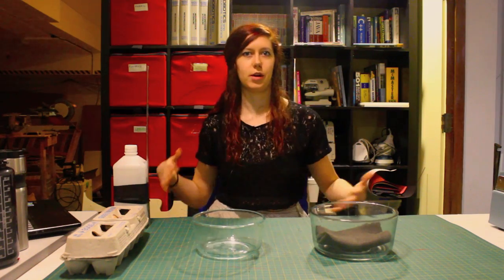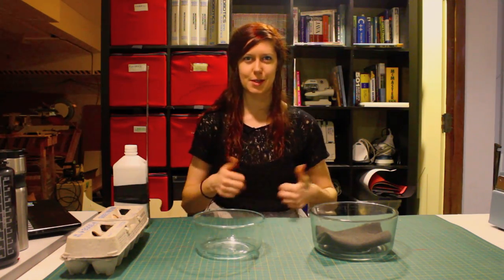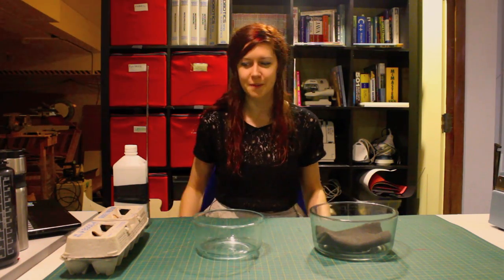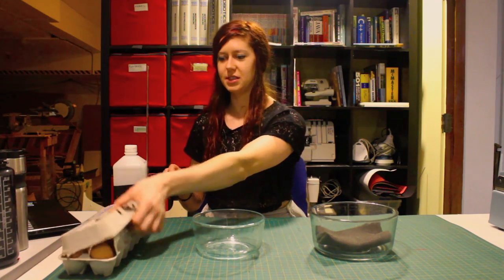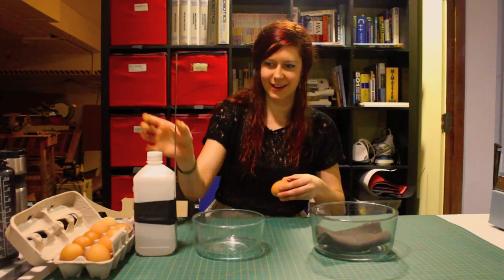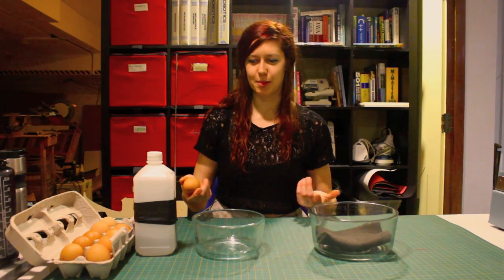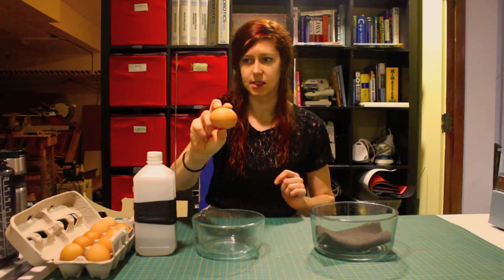Alright so now that we understand how to calculate impact force and figure out energy and stuff let's do a really awesome fun demonstration to show what we've learned. So I'm gonna use an egg drop as an example. So I have these eggs here and I'm gonna put my little ruler tied to a bottle to keep it upright to make sure that my height stays the same. So I'm gonna drop it at about ten inches.